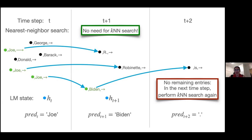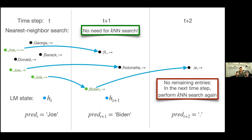We can resort back to KNN search if we don't have any more data store entries, or if we decide that the number of data store entries is too few — for example, below 10. We can set this threshold; I'll discuss this in a few slides.